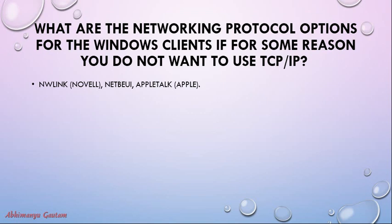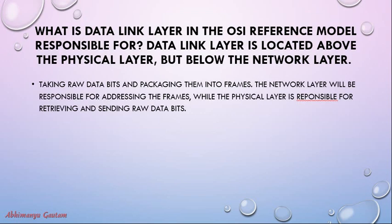Question: What is the data link layer in the OSI reference model responsible for? Answer: The data link layer is located above the physical layer but below the network layer. It takes raw data bits and packages them into frames. The network layer is responsible for addressing the frames, while the physical layer is responsible for retrieving and sending raw data bits.